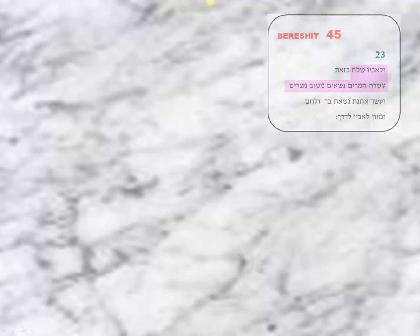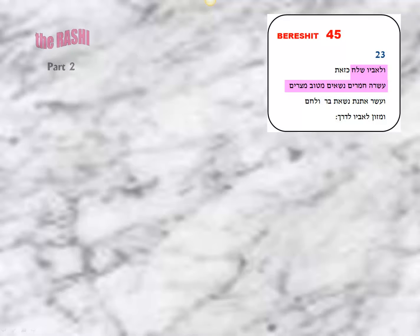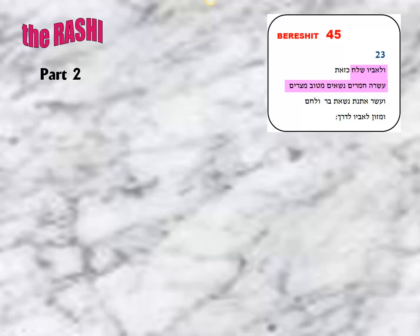Following on from his commentary to the superfluous Kazot, Rashi now focuses upon the first of the items that Yosef sent to his father, the Mituv Mitzrayim — the translation of which is 'from the choicest, the best that was available in Egypt at the time.' Rashi offers us two options.